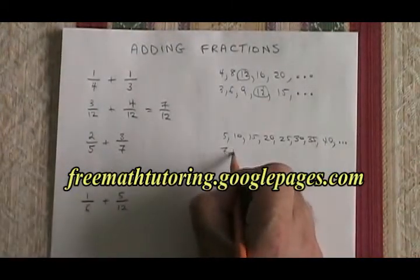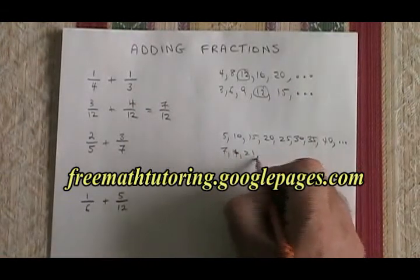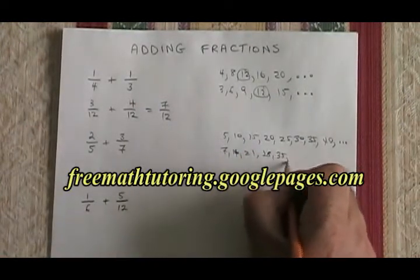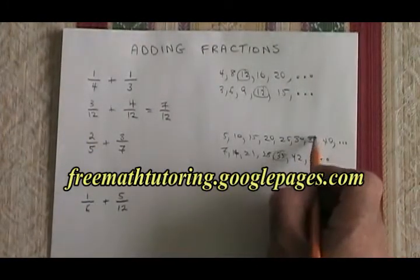For 7, I have 7, 14, 21, 28, 35, 42, and it keeps going. The lowest number that's on both lists is the 35.